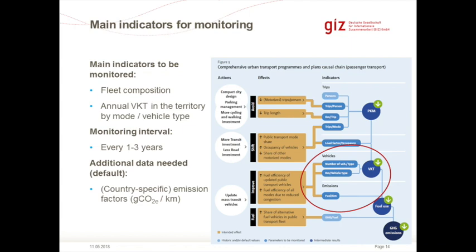Additional data needed includes ideally country-specific emission factors for different vehicle types. In this greenhouse gas inventory approach, we look at the number of vehicles by type in the city, kilometers by vehicle type, and fuel consumption. The interventions may also affect trips by mode through expanding public transport, but the effect is summarized in the kilometers traveled by vehicles and the number of vehicles necessary to transport people on the new system. This is a VKT-based approach to greenhouse gas accounting.